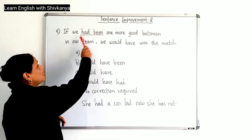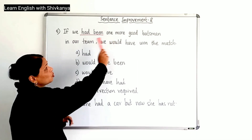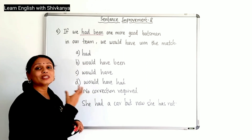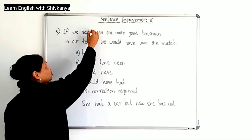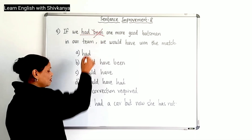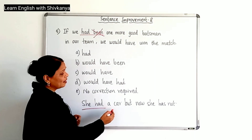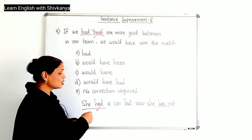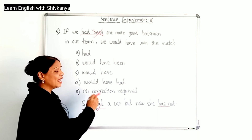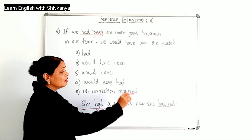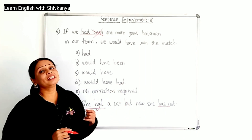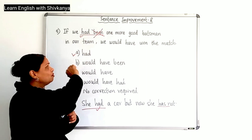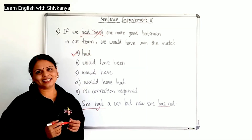Back to the sentence: 'If we had been one more good batsman' — it is basically speaking about having a good batsman on the team, it shows the possession. For showing any kind of possession, we don't need 'been'; 'had' is enough. Like in the example: she had a car but now she has not, meaning she had a car in the past — it shows the possession of hers on a car. HAVE, HAS, HAD are basically used to show possession. So 'had' is the correction here, which is option A — option A is the right answer.